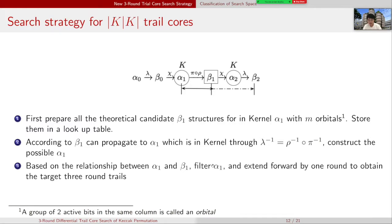Now I will explain in detail how the search strategies for K|K trail cores work. Firstly, we need to prepare all theoretical candidate β1 structures for in kernel α1 with m orbitals, and then store them in a lookup table. According to the fact that β1 can propagate to α1, which is in kernel through the inverse of linear operation, we construct all the possible states α1. Based on the relationship between α1 and β1, we filter all the states α1, and then we extend forward by one round to obtain the target three-round trail.